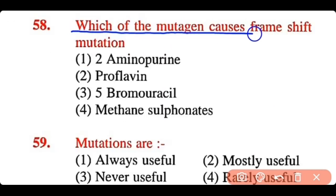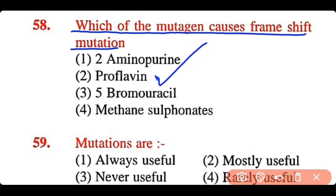Question 58: Which mutagen causes frameshift mutation? 2-aminopurine, Proflavine, 5-bromouracil, or methane sulfonate. The correct answer is option 2. Proflavine causes frameshift mutation.